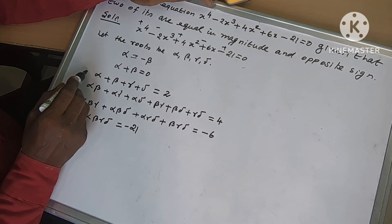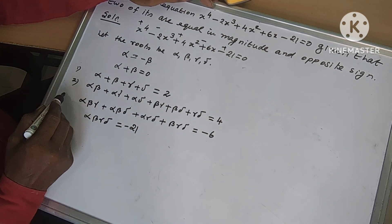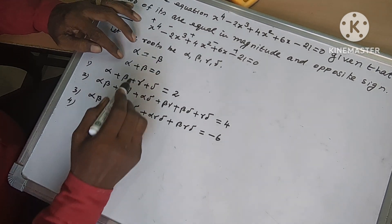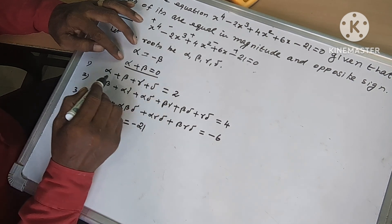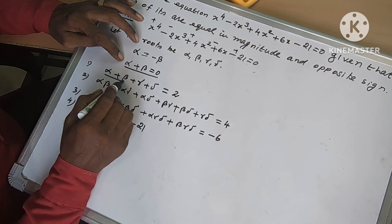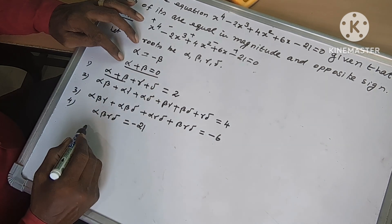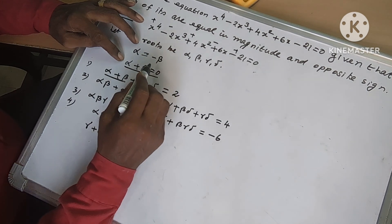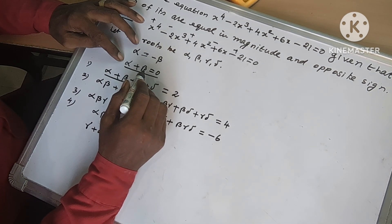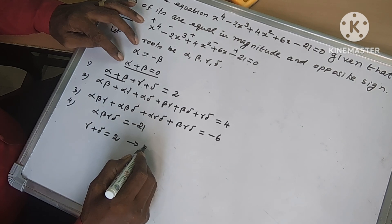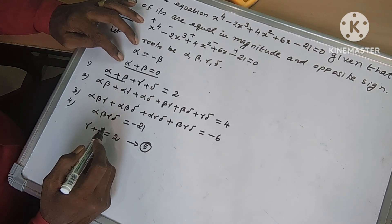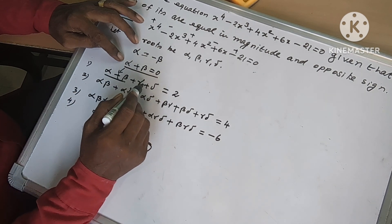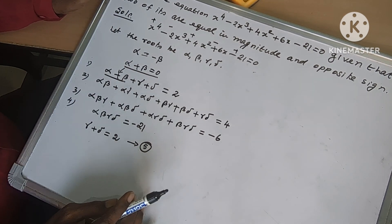These are the 4 relations — relation 1, 2, 3, and 4. Now we apply the condition alpha plus beta equals 0. So from relation 1, gamma plus delta equals 2. This is because of the given condition — we take this as relation 5. Since alpha plus beta is 0, gamma plus delta is 2.